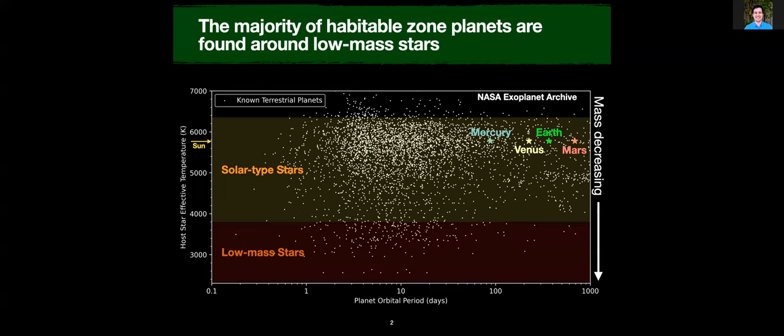We call stars within this temperature range solar-type or sun-like stars, and since mass decreases as you go down, we call these less massive stars low mass stars. Next, I'm going to show you where the known habitable zone planets are. The way we define habitable zone is that it has to be within a certain size or mass of Earth, and it also has to be able to sustain liquid water — so it has to have an equilibrium temperature that would allow for liquid water on the surface.